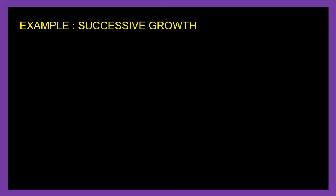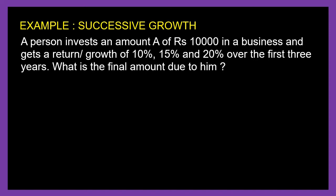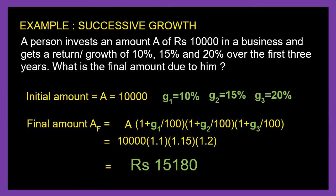Example of successive growth: A person invests Rs. 10,000 in a business and earns growth of 10%, 15%, and 20% over three years. The final amount AF equals 10,000 into 1.1 into 1.15 into 1.2. Note that it is smart to directly obtain the factors 1.1, 1.15, and 1.2 when given growth rates of 10%, 15%, and 20%.